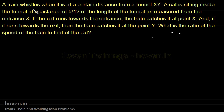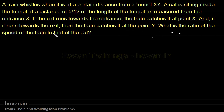A train whistles when it is at a certain distance from a tunnel XY. A cat is sitting inside the tunnel at a distance of 5/12 of the length of the tunnel as measured from the entrance X. If the cat runs towards the entrance, the train catches it at point X. If it runs towards the exit, the train catches it at point Y. What is the ratio of the speed of the train to that of the cat?